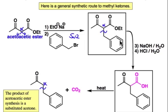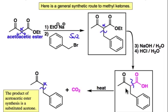Under the conditions of hydrolysis, where we hydrolyze the ester group and then neutralize it, we make the β-keto acid, which, upon gentle warming, is set up for decarboxylation to make the product — the methyl ketone.